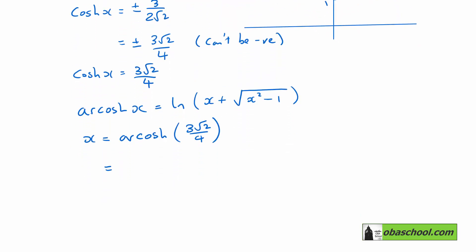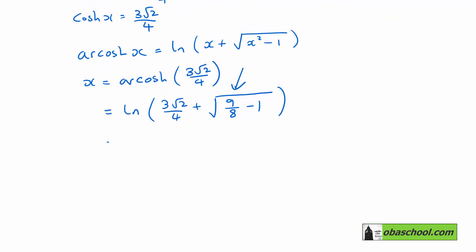So that's going to be the natural log of 3 root 2 on 4 plus the square root of 9 over 8 take away 1. Remember 9 over 8 was what cosh squared was. So that's going to be the natural log of 3 root 2 on 4 plus 9 over 8 take away 8 over 8. So that's the square root of 1 over 8.